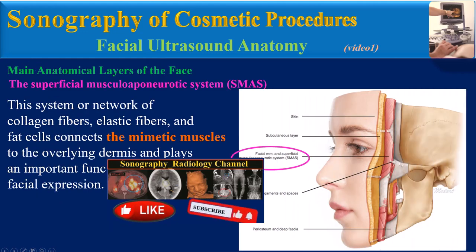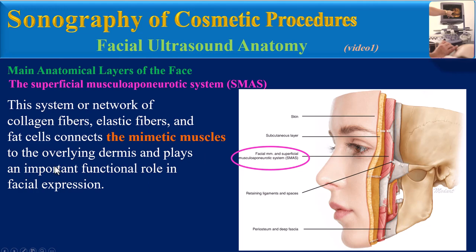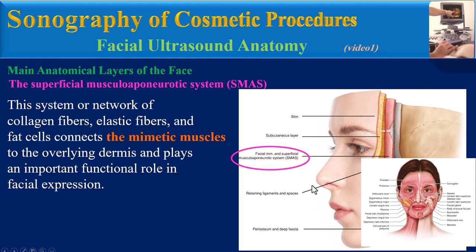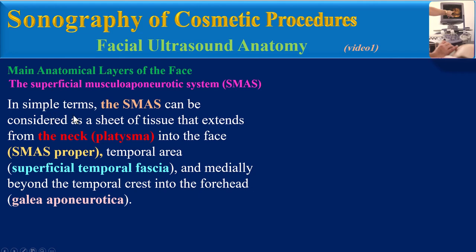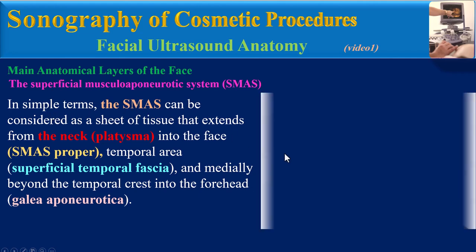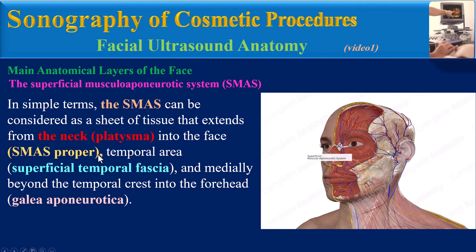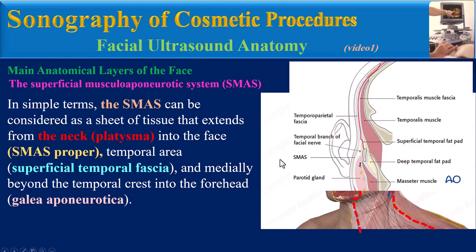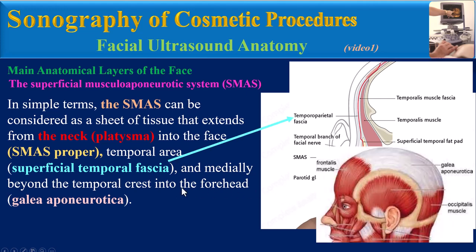The superficial musculoaponeurotic system: this system is a network of collagen fibers, elastic fibers, and fat cells that connects the mimetic muscles to the overlying dermis and plays an important functional role in facial expression. In simple terms, the SMAS can be considered as a sheet of tissue that extends from the neck or platysma into the face — known as SMAS proper — also in the temporal area, known as superficial temporal fascia, and medially beyond the temporal crest into the forehead, known as galea aponeurotica.